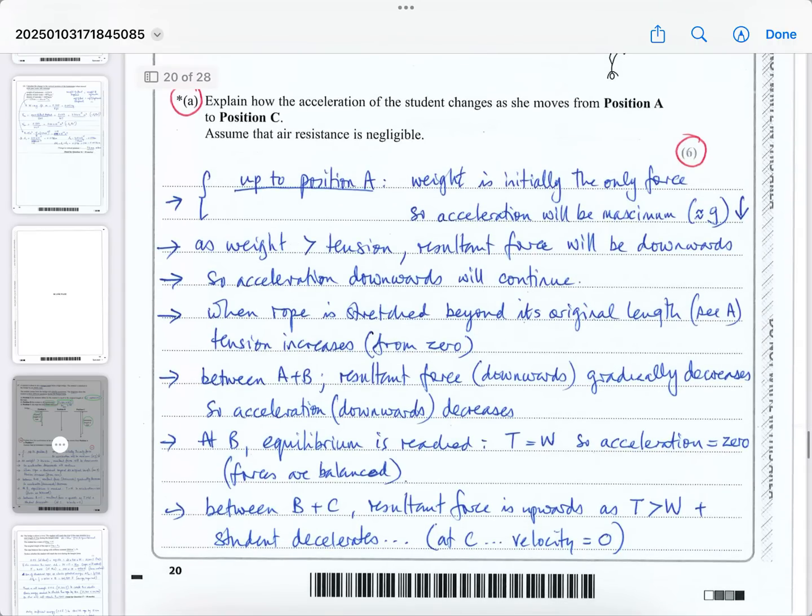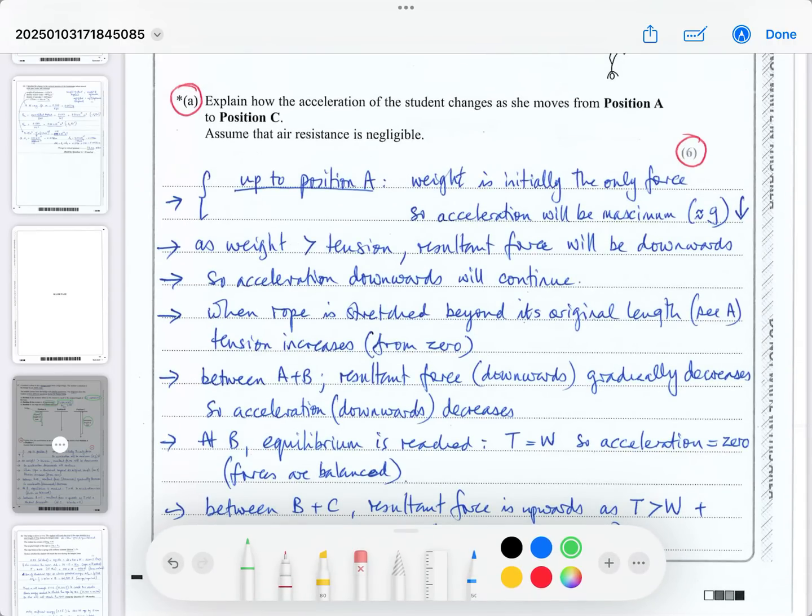The first question says explain, it's a six mark question. Whenever you see an asterisk, it's the quality of your written communication that's going to get you the marks. They want you to make good explanation with detail, depth, and clarity. They want your sequencing of thoughts arranged in a logical manner. It says explain how the acceleration of the student changes as she moves from position A to position C, the maximum extension of the bungee rope. Assume that air resistance is negligible, so we can ignore energy losses to the surroundings.